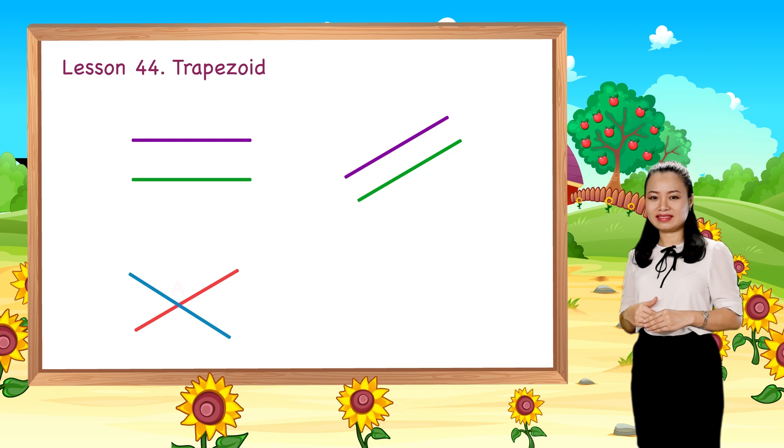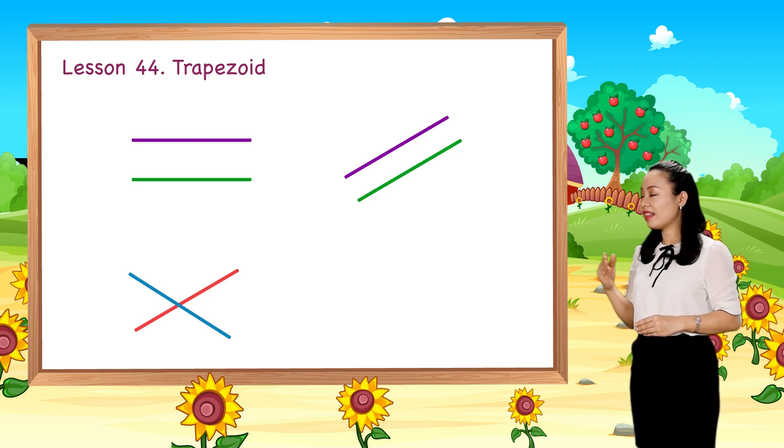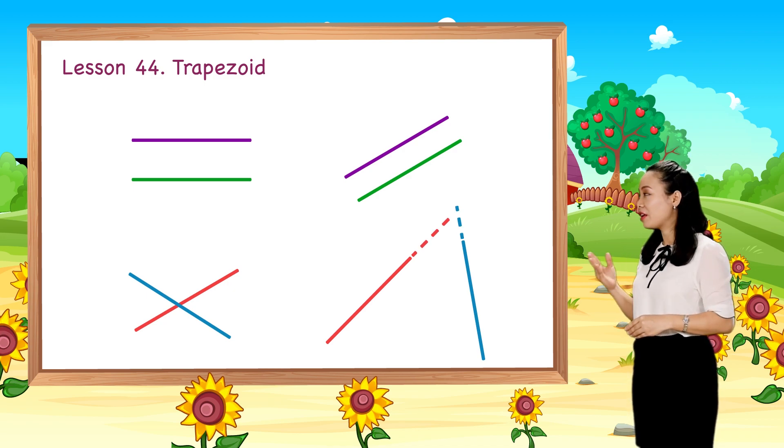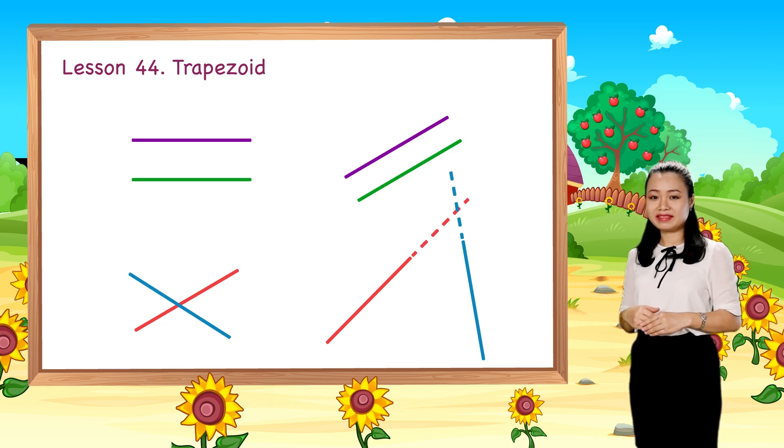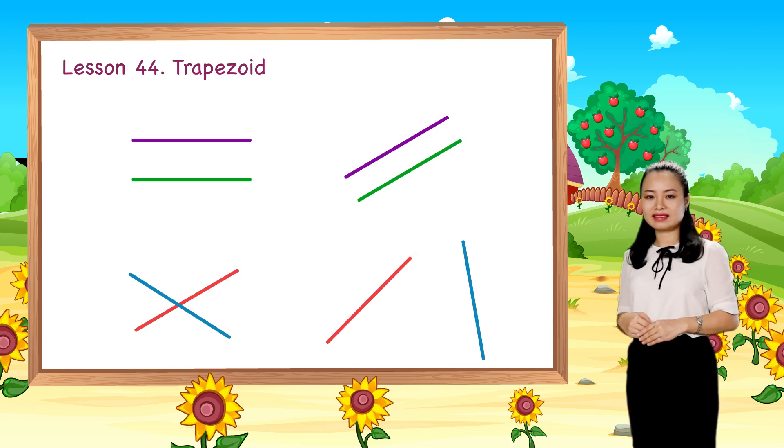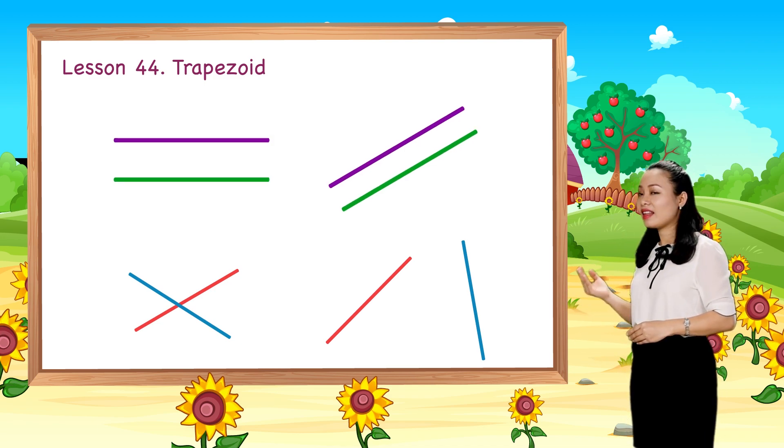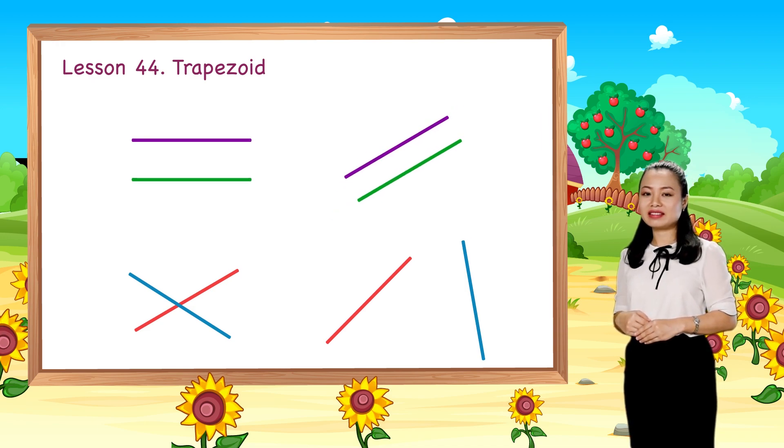These lines are not parallel too because they will meet each other at a point. So now you can recognize lines that are parallel and those that are not.